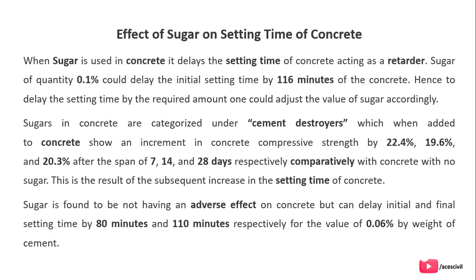Sugar and concrete are categorized under cement destroyers. When sugar is added to concrete, it shows an increment in concrete compressive strength of 22.4%, 19.6%, and 20.3% after spans of 7, 14, and 28 days respectively.